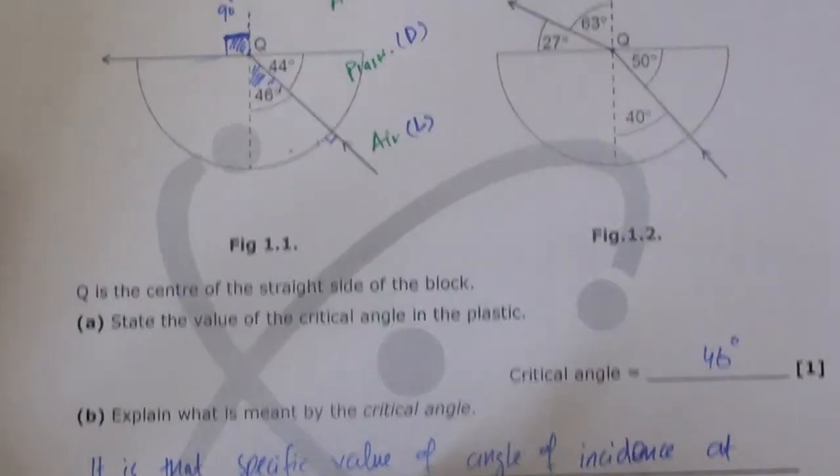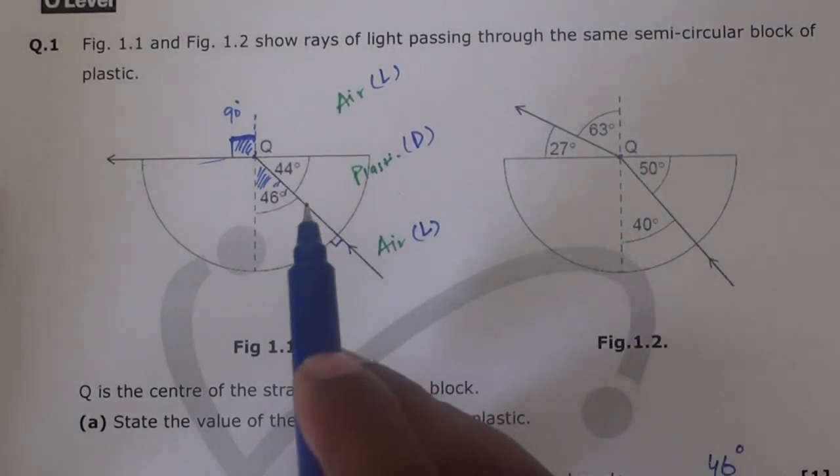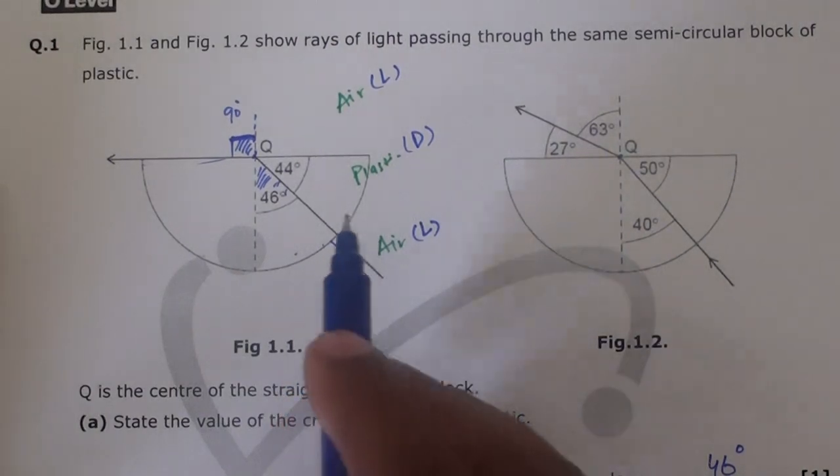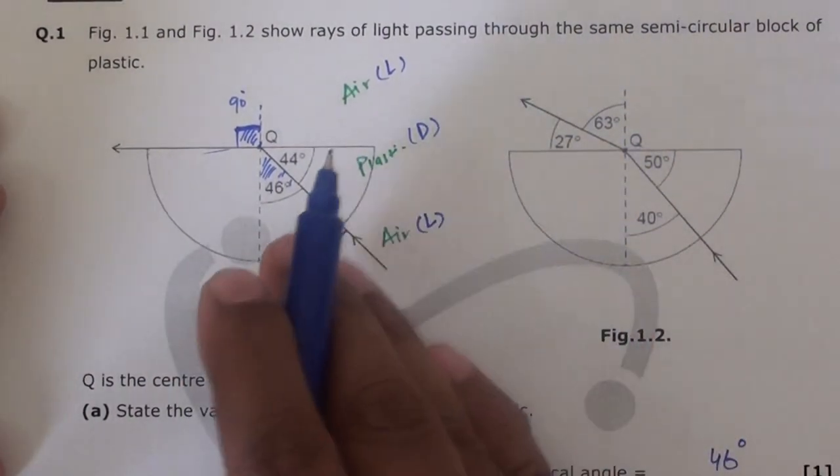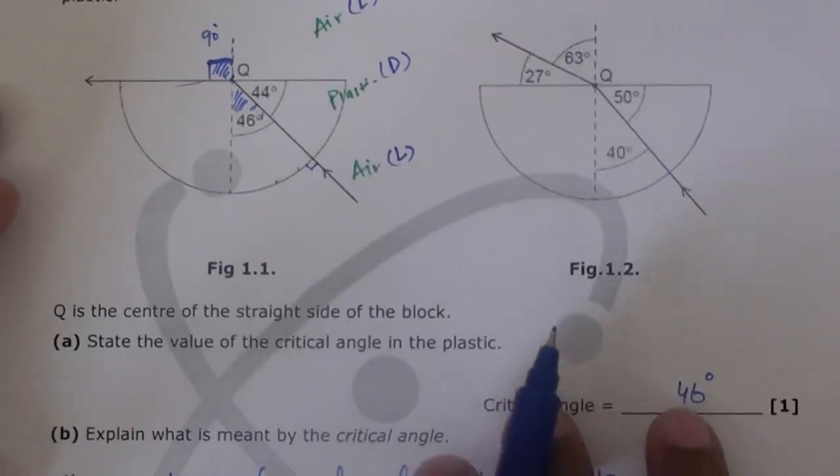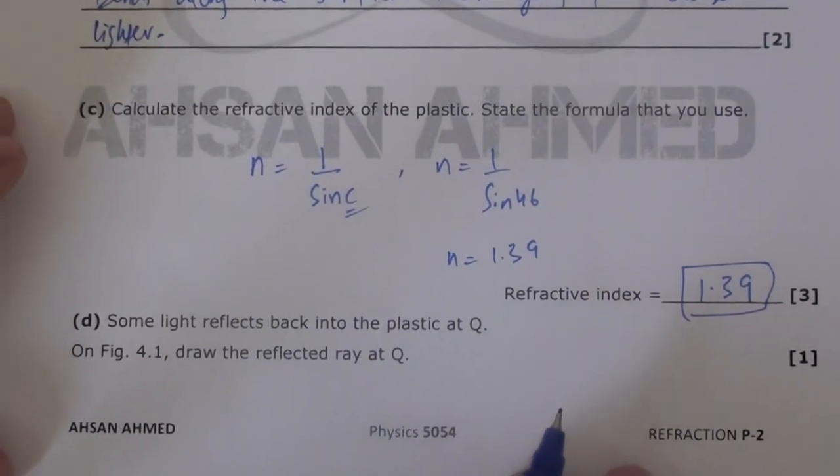Now the idea is that since it's made up of the same material, no matter which figure you take, whatever calculations you do, the refractive index should be same. They both are made from the same material. Refractive index is all about the material.